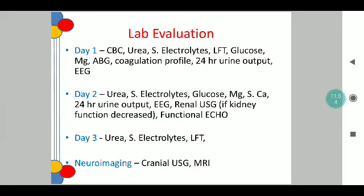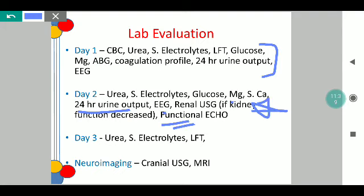To evaluate this, we go in a day-by-day approach. On day 1, the basic investigations include a complete blood count, urea, serum electrolytes, liver function test, blood glucose level, magnesium, an ABG, coagulation profile, to monitor 24-hour urine output, and a baseline EEG. On day 2, the same investigations are repeated — urea, electrolytes, blood glucose, magnesium, calcium, 24-hour urine output, EEG — and a renal ultrasound is indicated if there is alteration in renal function. On day 3, urea, serum electrolytes and liver function test to be checked along with neuroimaging based on cranial ultrasound and MRI, which is best done on day 3.